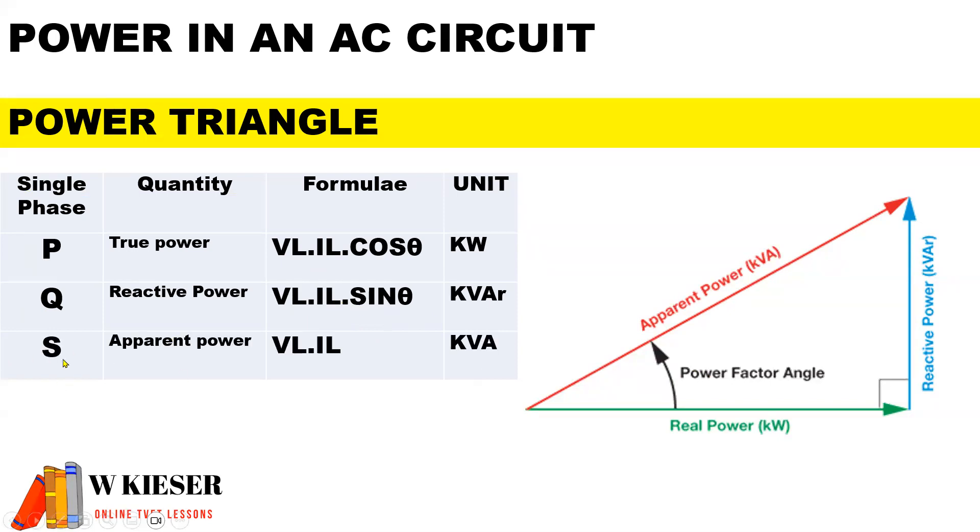For apparent power the symbol is S and the unit is KBA. Here is VL multiplied by IL.